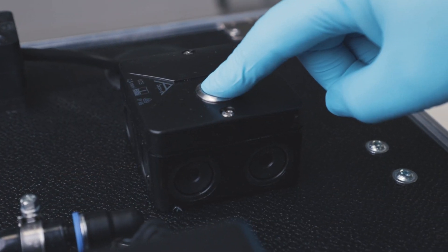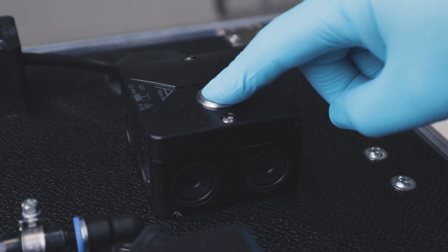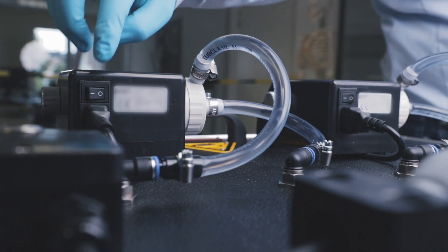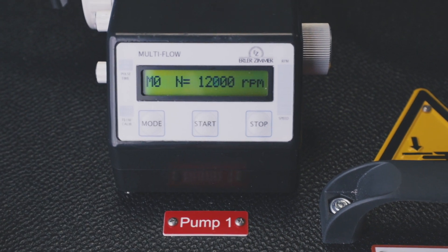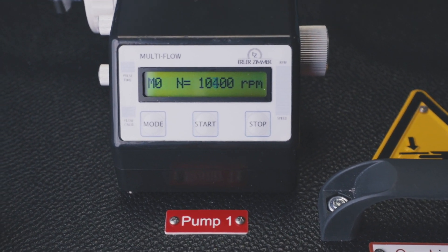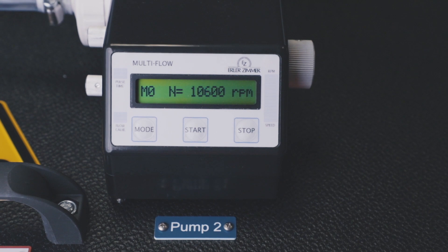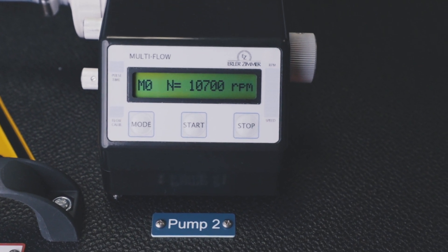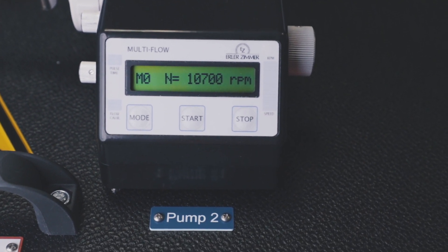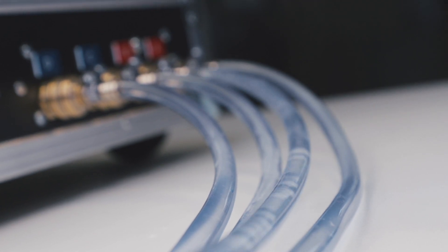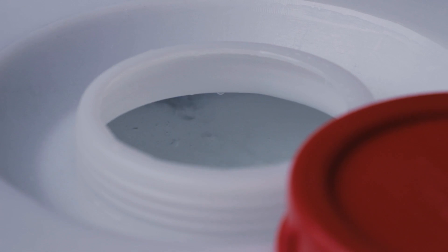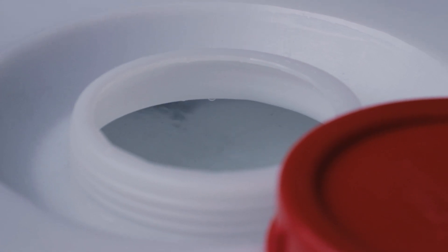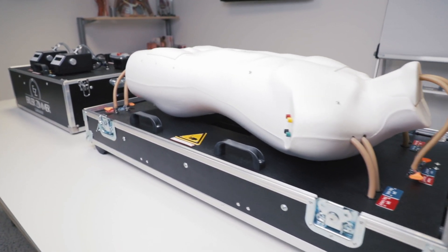Then press the filling button to pump water into the two pumps. Switch on the pumps. Start both pumps in mode zero. The tubes will transport all air inside them to the tank until all air is out of the system. Now, the system is ready to use.